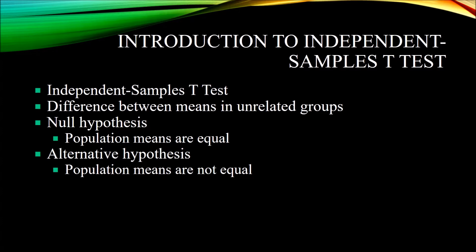The independent samples t-test gives us information about the difference between means in unrelated groups. It does this specifically by providing what's referred to as a calculated t-value. We compare that t-statistic generated by the independent samples t-test to a critical t-value. If that calculated t-value is greater than the critical t-value, we reject the null hypothesis. The null hypothesis in the case of an independent samples t-test is that the population means are equal. The alternative hypothesis is that the population means are not equal.